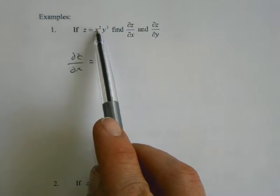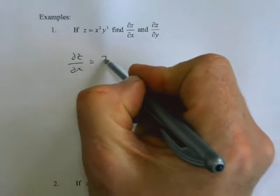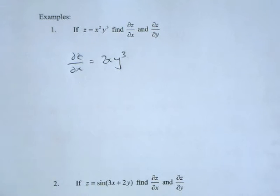So the only thing that we're differentiating is the x. So x squared when we differentiate, it turns into 2x, and the y cubed is just a constant.